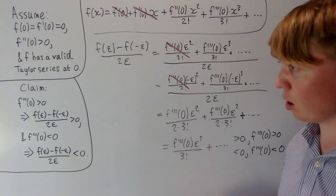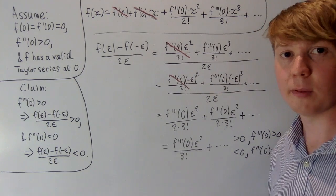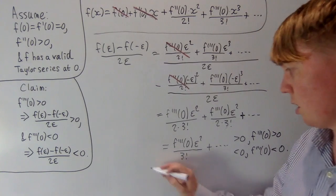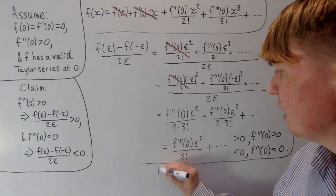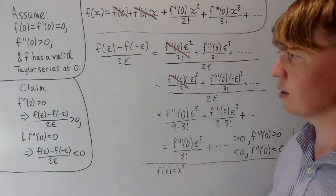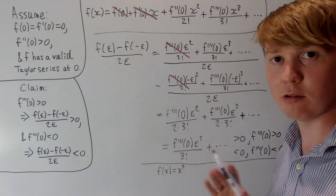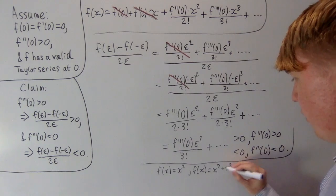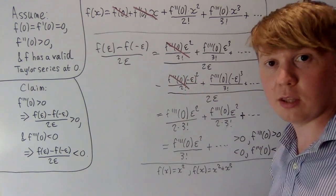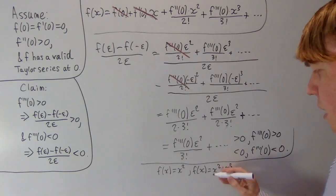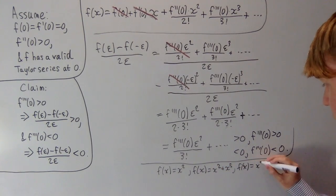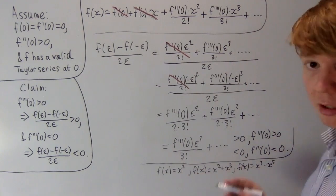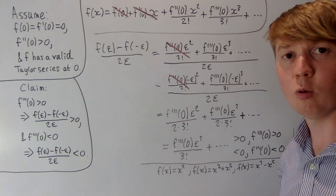We haven't worked very rigorously, but we've shown the geometric interpretation appears valid under simplifying assumptions. When the third derivative equals zero it's indeterminate. For example, f(x) = x² has third derivative zero and is symmetric around the normal. But f(x) = x² + x⁵ is determined by the fifth derivative and is stretched in one direction, while f(x) = x² − x⁵ is stretched in the other. So we can have symmetry, or be stretched left or right, depending on the sign of the fifth derivative.